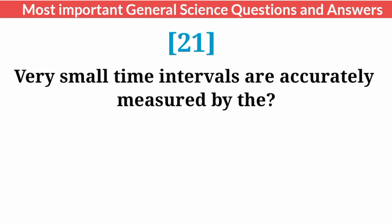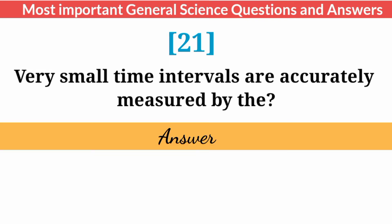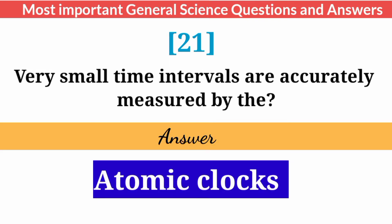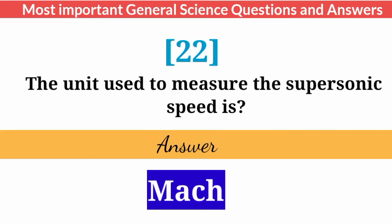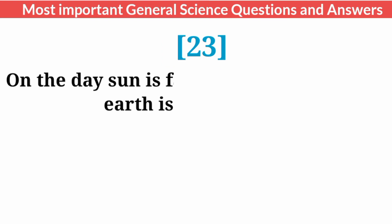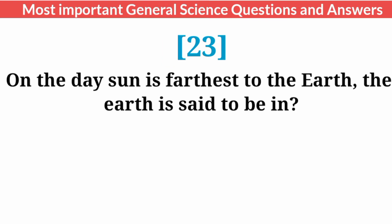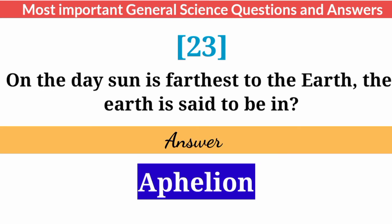Very small time intervals are accurately measured by? Answer: Atomic clocks. The unit used to measure the sharpness of speed is? Answer: Mach. On the day the sun is farthest from the earth, the earth is said to be in? Answer: Aphelion.